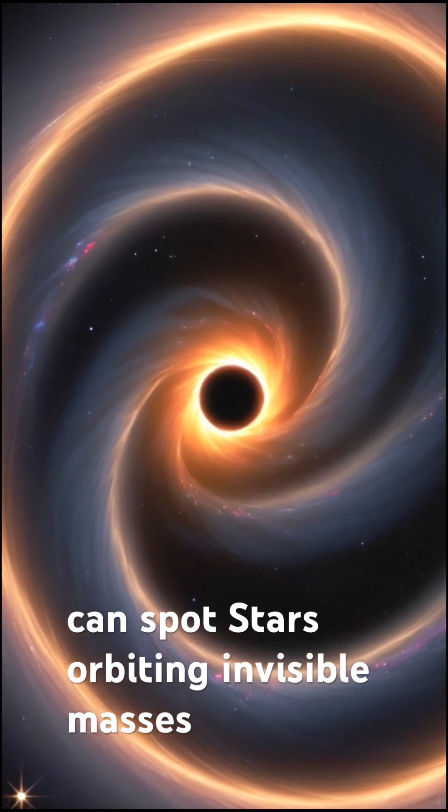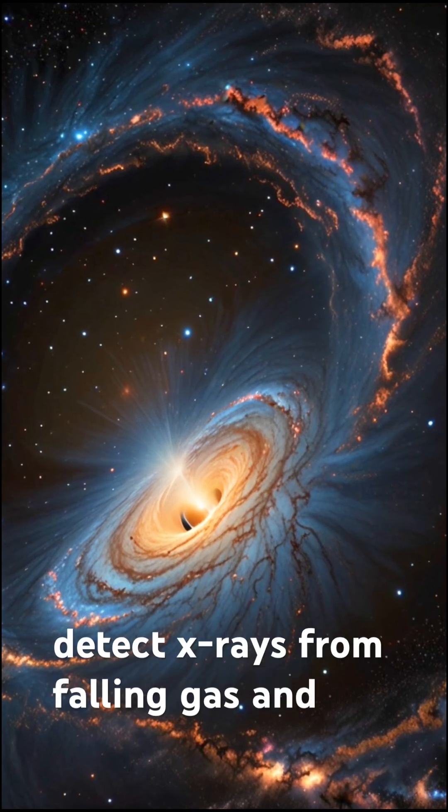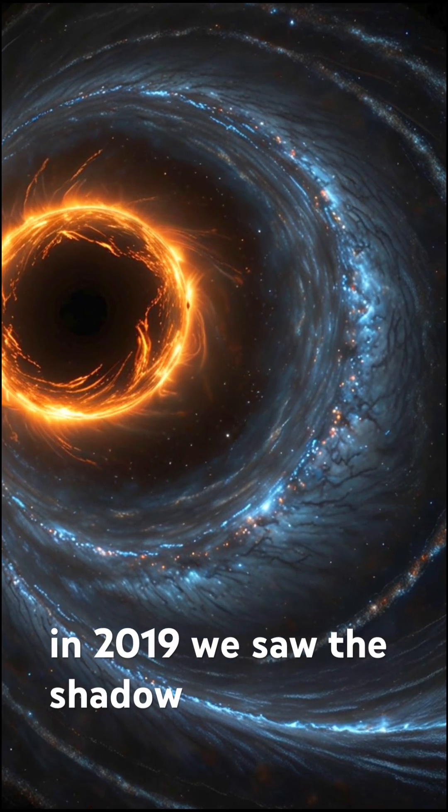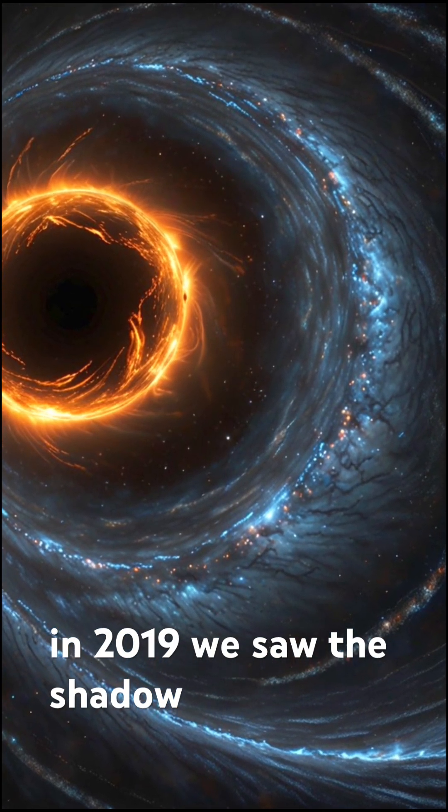We can't see black holes directly, but we can spot stars orbiting invisible masses, detect x-rays from falling gas. And in 2019, we saw the shadow of one.